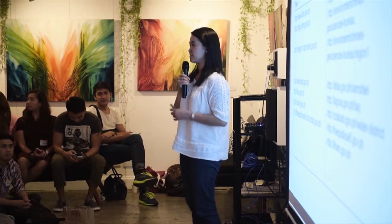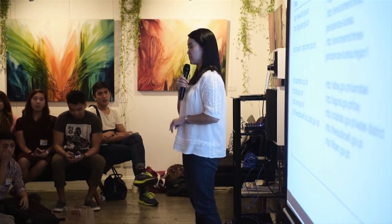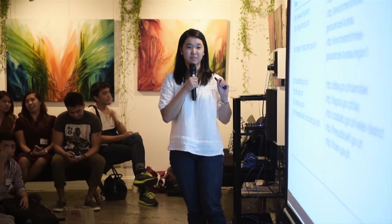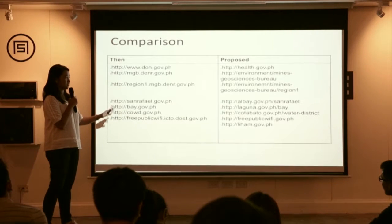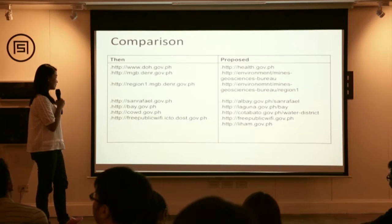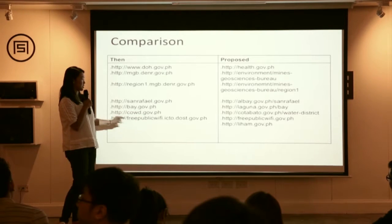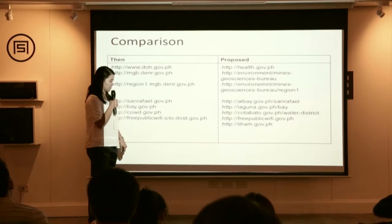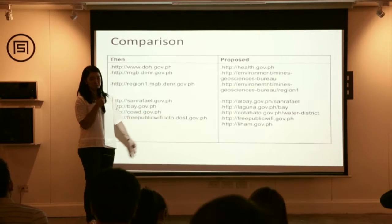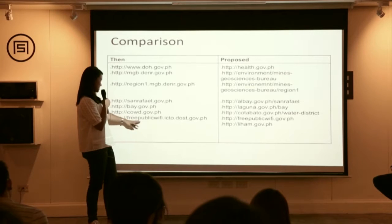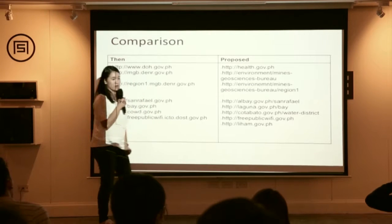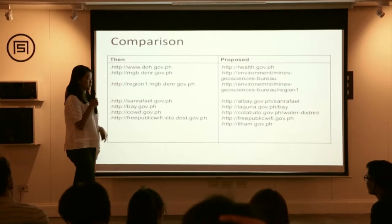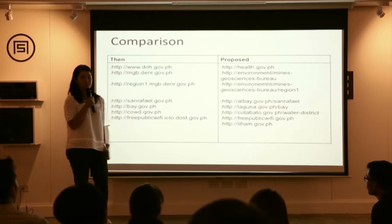Bay would become laguna.gov.ph/bay. And the Cotabato water district would become cotabato.gov.ph/water-district. Then for a nationwide project — free public Wi-Fi. ICTO (Information and Communications Technology Office) is an attached agency of DOST, but people don't know what ICTO is. Since it's a nationwide project, that would become freepublicwifi.gov.ph. Another nationwide service is Tihang.gov.ph — it's a mailing service of the government.